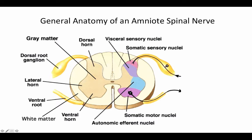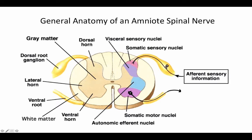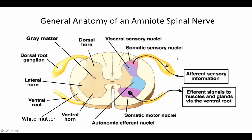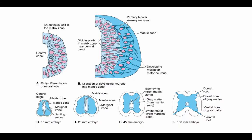A collection of cell bodies within the central nervous system is known as a nucleus. Motor neurons leave the CNS through the ventral root. The dorsal root and the ventral root join together just past this point to form the spinal nerve. So we have afferent or sensory information coming in through the dorsal root with cell bodies in the dorsal root ganglion, and efferent signals flowing out through the ventral root.